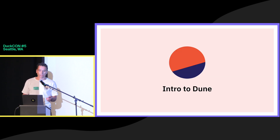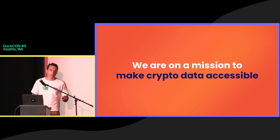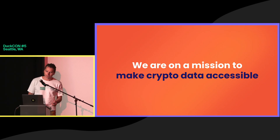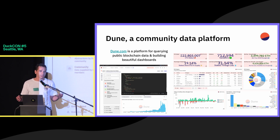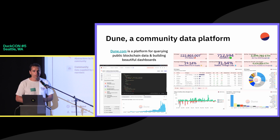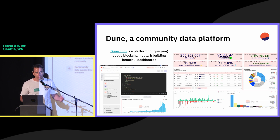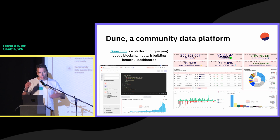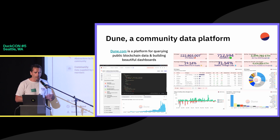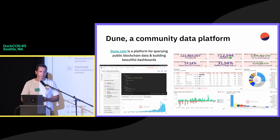What's Dune? We're basically all about making blockchain and crypto data accessible. We are a community data platform. People crowdsource and write SQL queries that select from base tables containing the blockchain data that we ingest and put into a decently sized schema. And then they build on top of each other — they can fork their own queries, create views, and create higher abstractions.